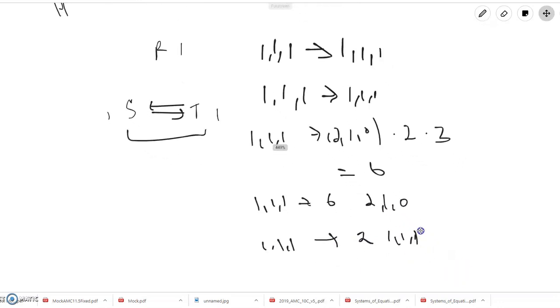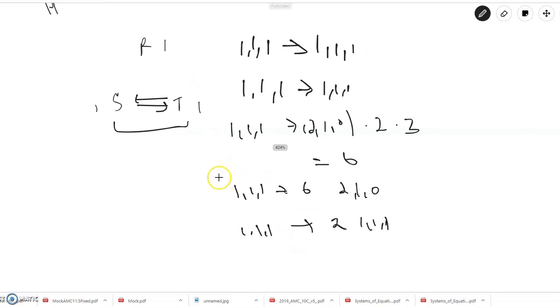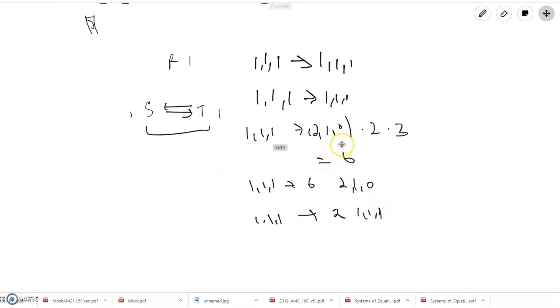And as a reality check, basically each player has two options to give their money to another player. And so there are eight possible combinations, because it's just two cubed, and six plus two is eight. So we have accounted for everything.